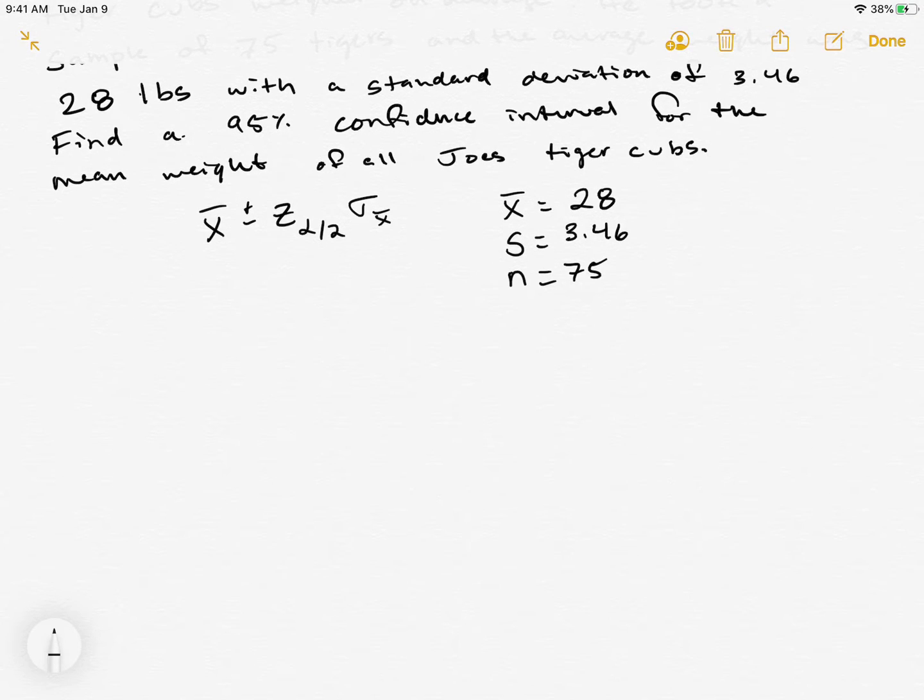We pretty much have everything we need for this confidence interval. The only thing we're missing is that z critical value. For 95 percent you know it's 1.96, but just in case you need to look that up, we'll practice and show how we do that.